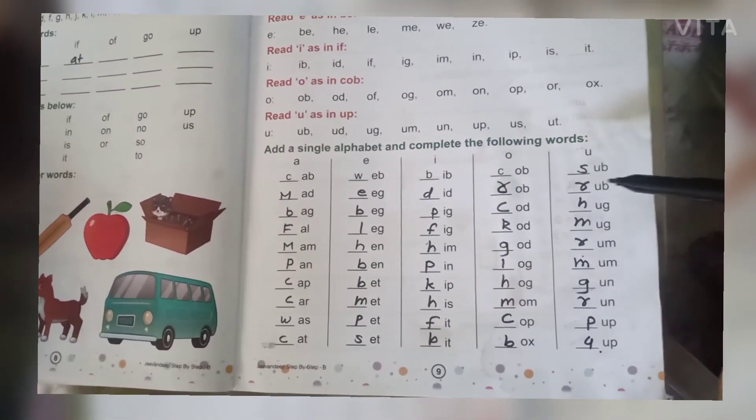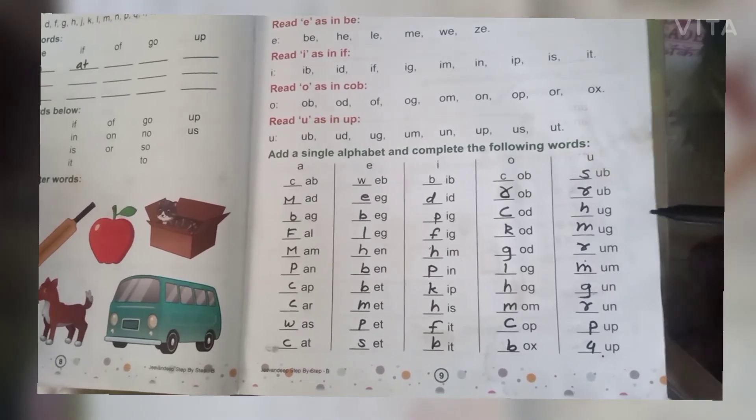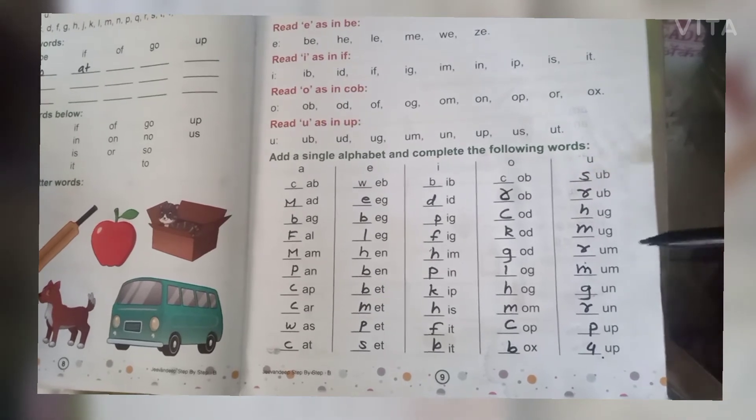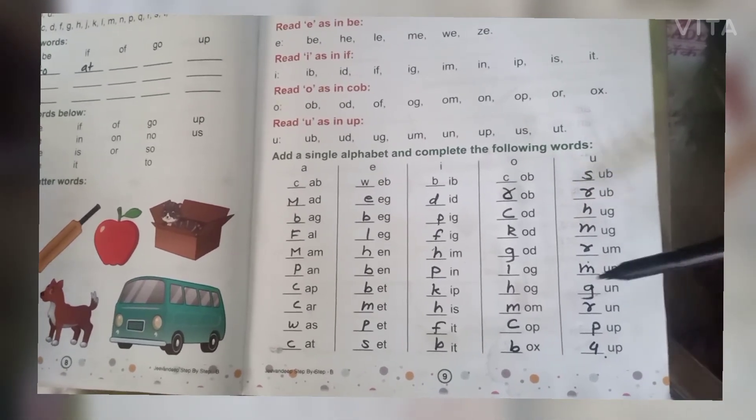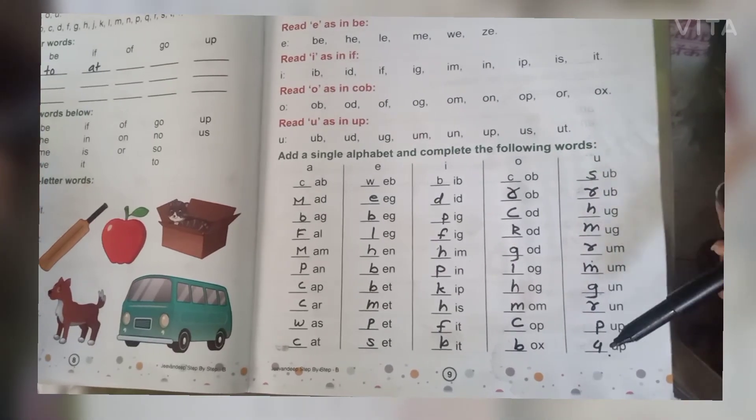S-U-B, sub. R-U-B, rub. H-U-G, hug. M-U-G, mug. R-U-M, rum. M-U-M, mum. G-U-N, gun. R-U-N, run. P-U-P, pup. G-U-P, gup.